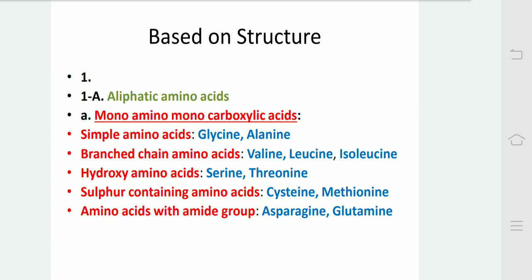Classification of amino acids based on their structure. Aliphatic amino acids include: first, mono-amino monocarboxylic acids — these are simple amino acids, which are glycine and alanine. Then, branched-chain amino acids — these are valine, leucine and isoleucine. Hydroxy amino acids — these are threonine and serine. Sulfur-containing amino acids — these include cysteine and methionine. Amino acids with amide group — these include asparagine and glutamine.